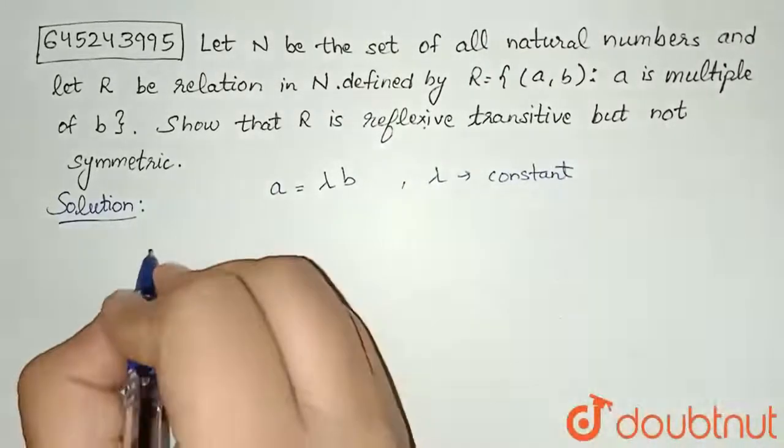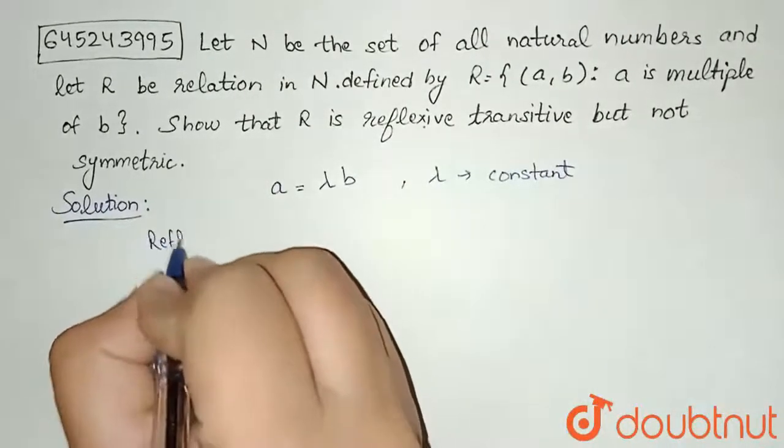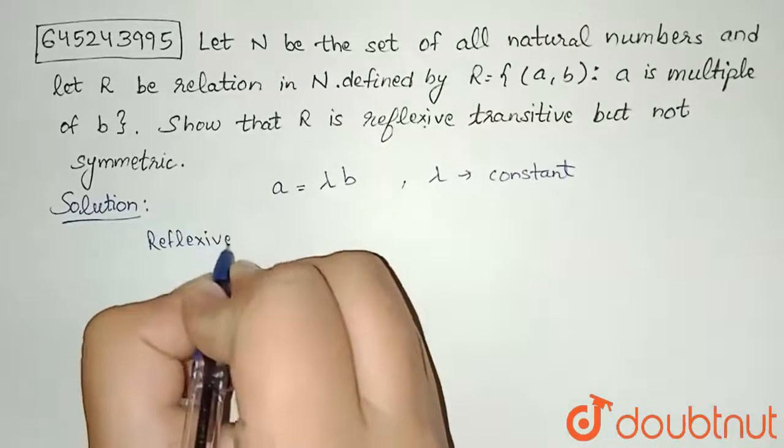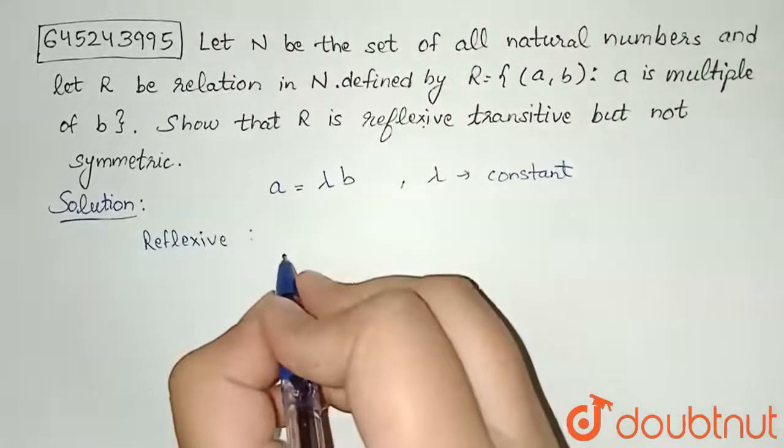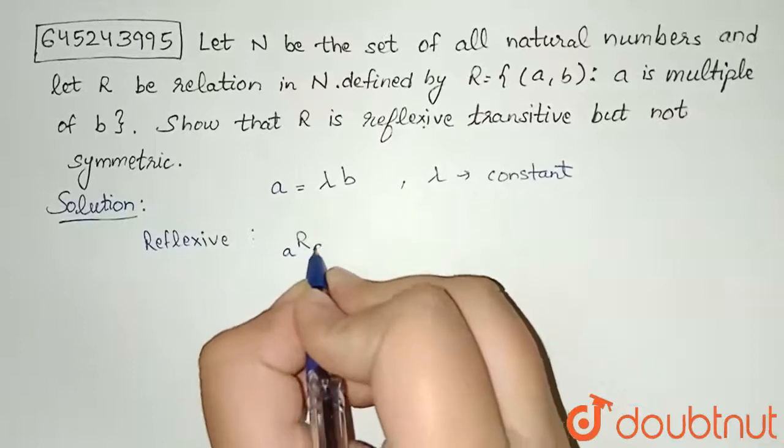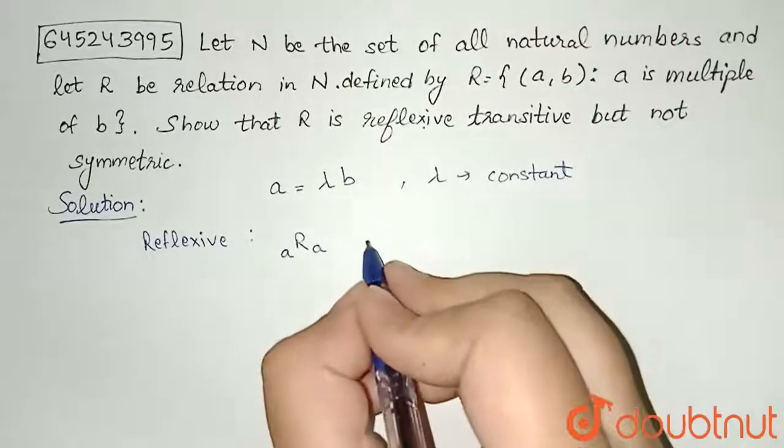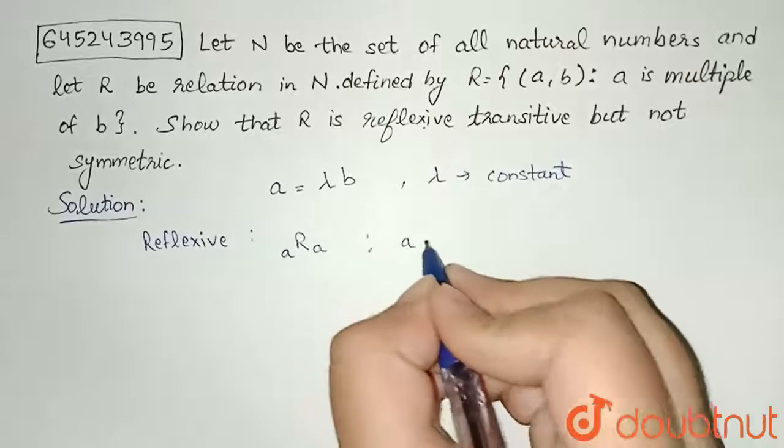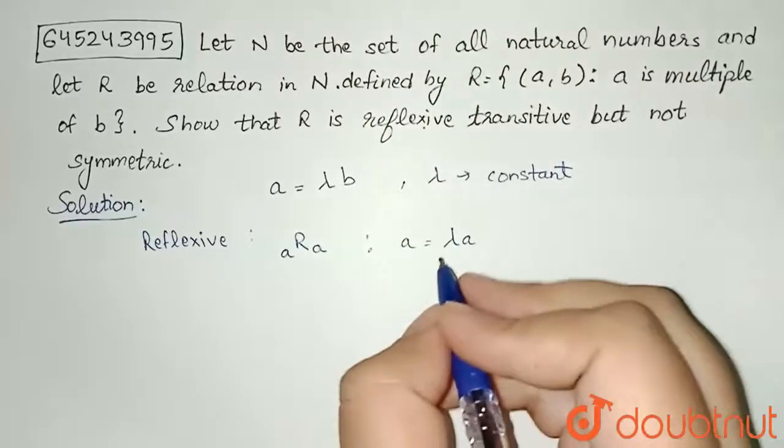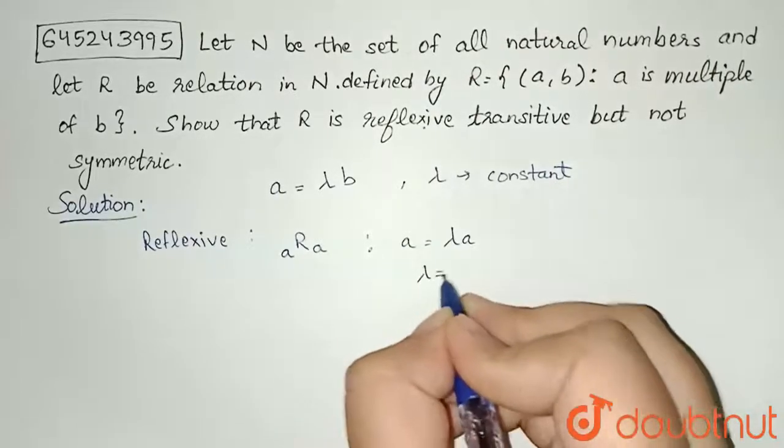Now we will check for the reflexive property first. In reflexive property of a relation, we see that an element is related to itself. So according to this definition, we get a equals lambda times a, and from this I am getting lambda equals 1.